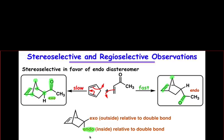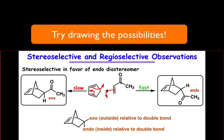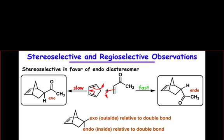The observation that's usually made is that the endo isomer tends to be favored. The reason has to do with orbital overlap between p-orbitals on the substituent on the dienophile and the p-orbitals of the diene. There are two ways that the dienophile could approach the diene: with its substituent pointing towards the diene, giving the endo product, or pointing away from the diene, giving the exo product.